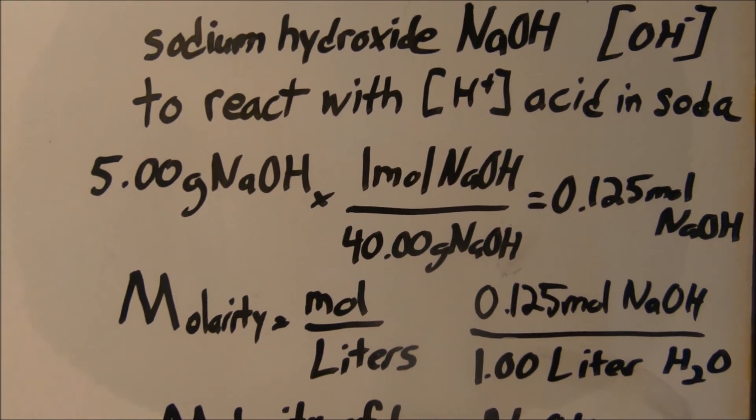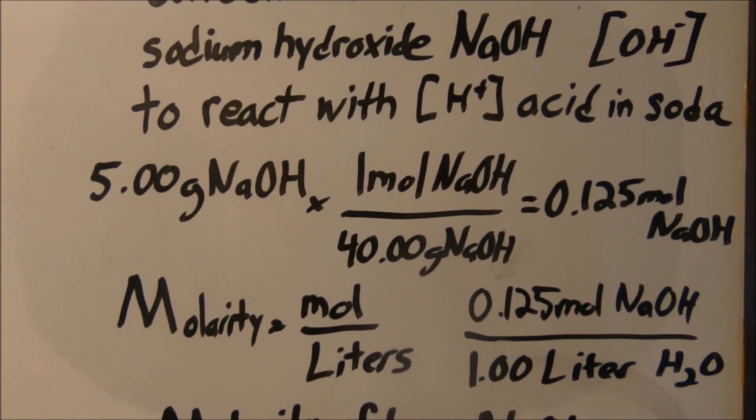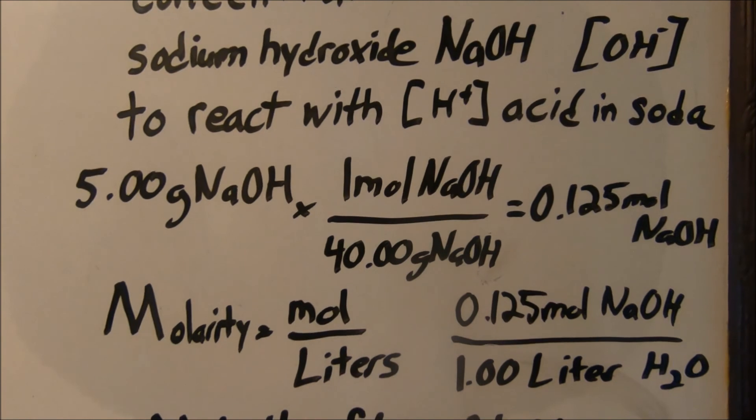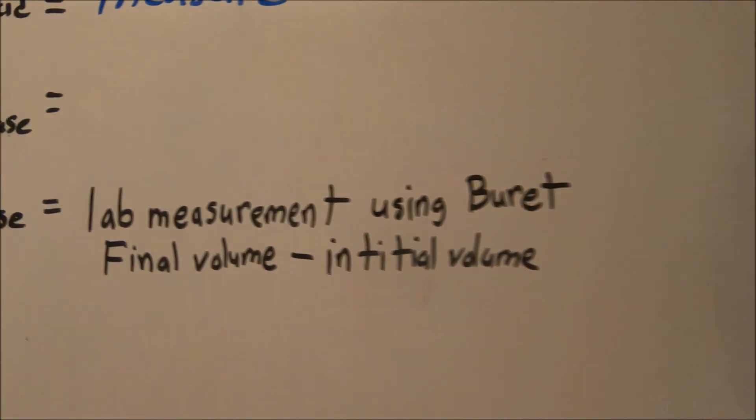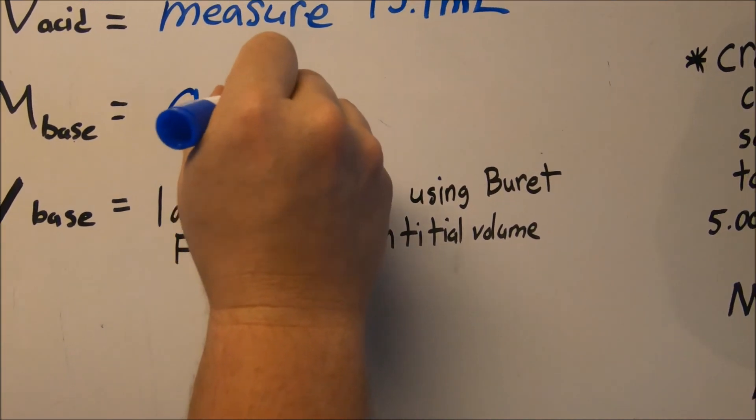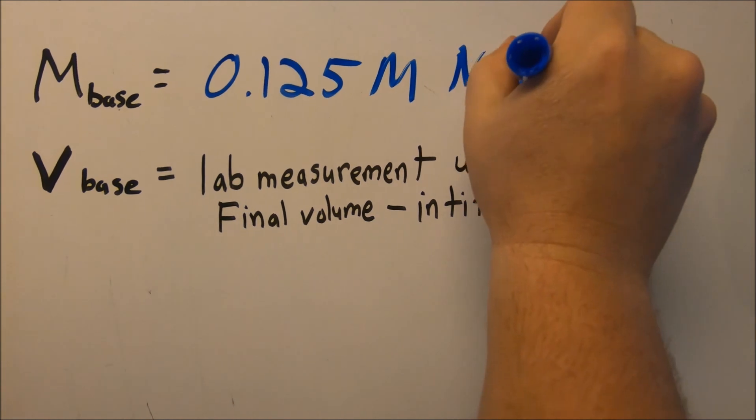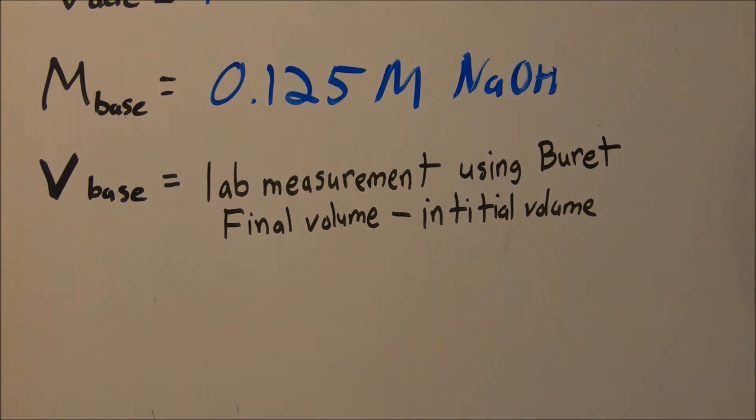This gives us a molarity of 0.125 moles of sodium hydroxide, so we have a known concentration of our base. That's a key idea there: we've got to have a known starting point for that concentration of the base.